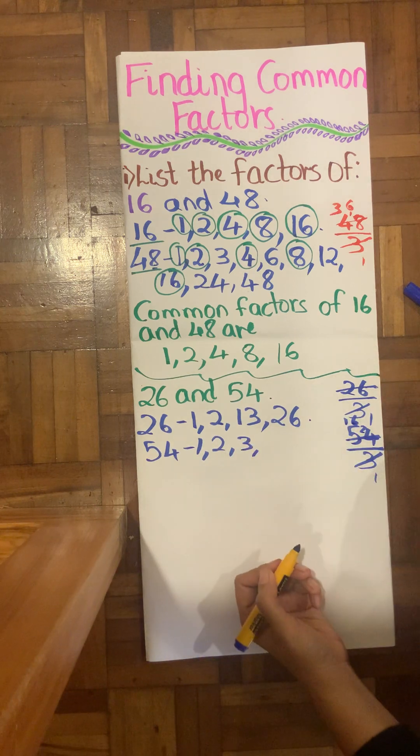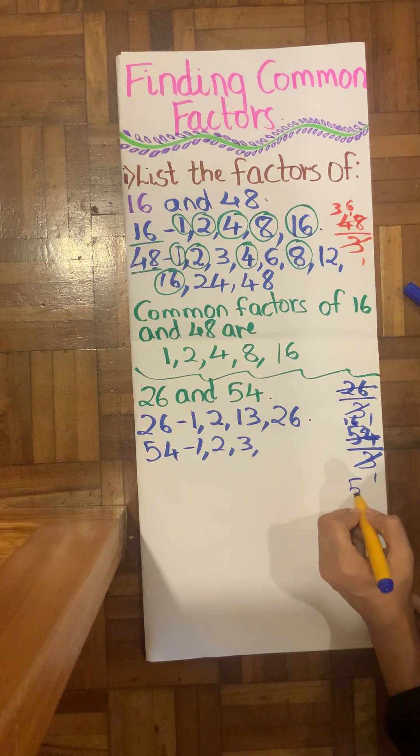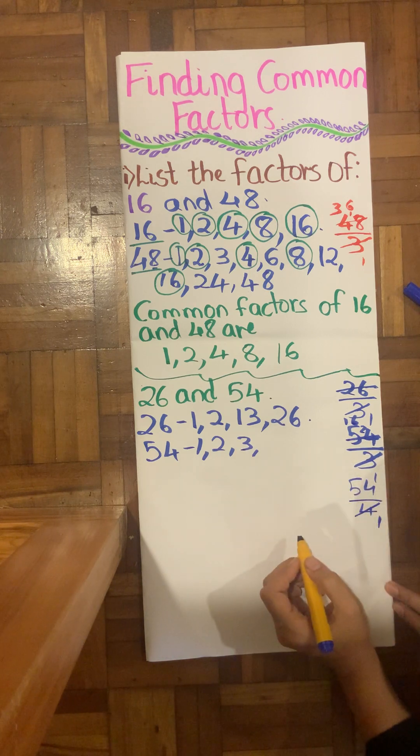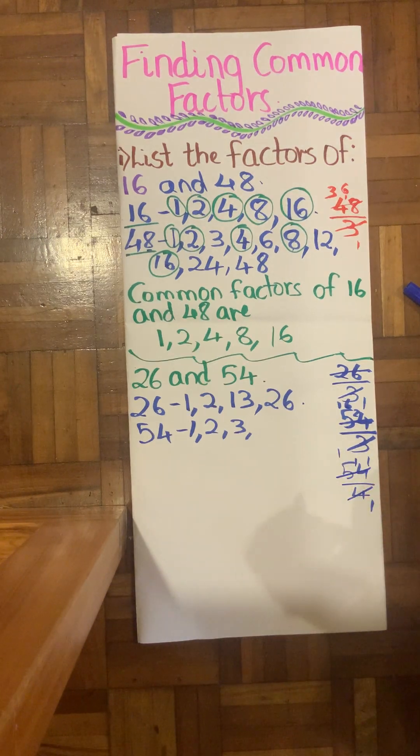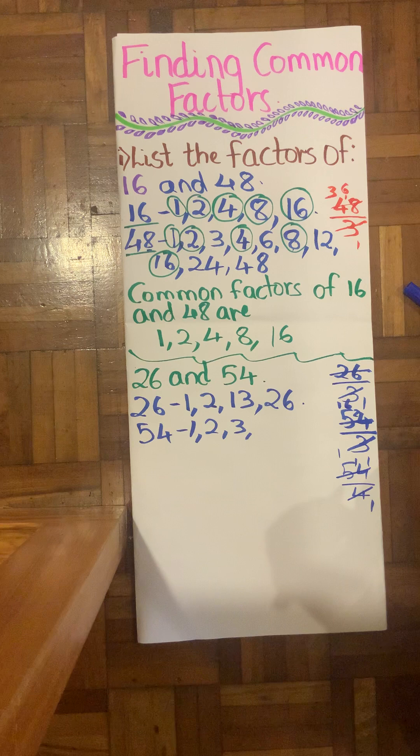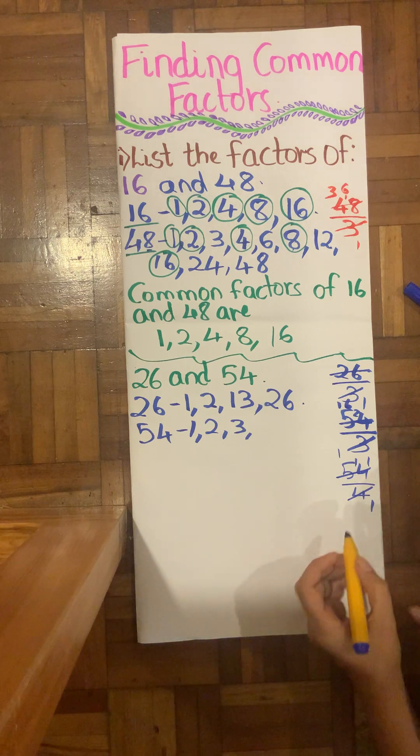Then I have 4. So 54 in 4 times table. 4 times 1 is 4, 1 carry. No 14 doesn't come. Therefore then I have my 5, not possible.